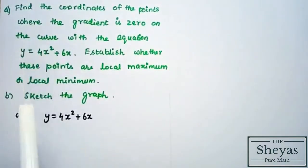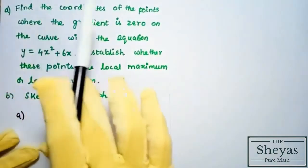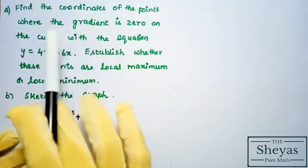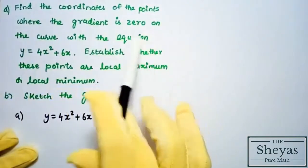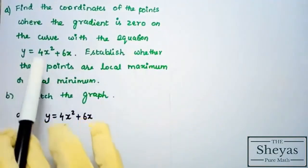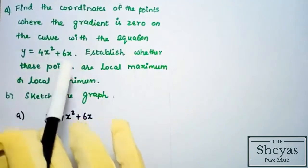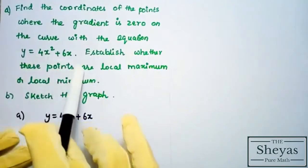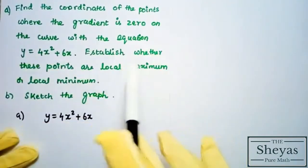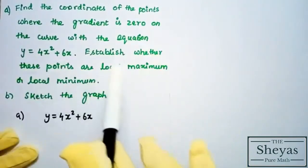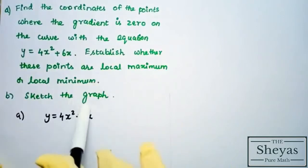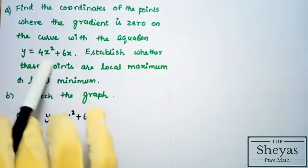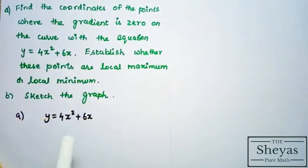Now we are going to solve this problem: find the coordinates of the points where the gradient is 0 on the curve y = 4x² + 6x. Establish whether these points are local maximum or local minimum. Then part b: sketch the graph of y = 4x² + 6x.